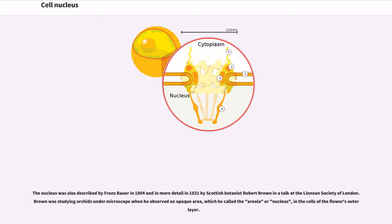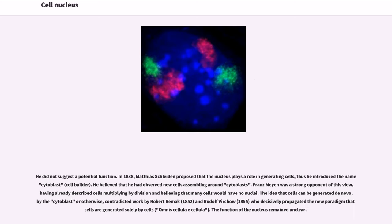The nucleus was also described by Franz Bauer in 1804 and in more detail in 1831 by Scottish botanist Robert Brown in a talk at the Linnean Society of London. Brown was studying orchids under microscope when he observed an opaque area, which he called the areola or nucleus, in the cells of the flower's outer layer. He did not suggest a potential function.